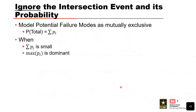Option 1 is ignoring the intersection event and its probability — the easiest approach. We assume the failure modes are mutually exclusive and simply sum their probabilities. This is a reasonable approximation when the total probability is small and when one potential failure mode has a much larger probability than the others. In that case, the intersection is the product of a bunch of small numbers, which are usually small enough to be ignored, so we don't inflate the total risk estimate too badly.